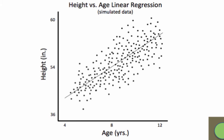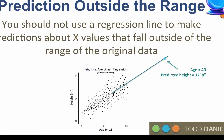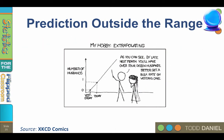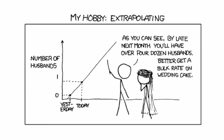Here's what can happen otherwise. If I use child data to predict heights later in life, I would predict that when you are 40 years old, you will be 12 feet 8 inches tall. But that's not true, because we know that growth slows down and stops in adolescence, so the child data cannot be used to predict adult heights. As this XKCD comic points out, extrapolation as a hobby ends in absurdity.